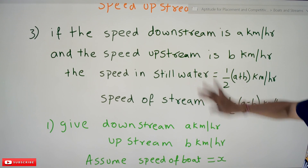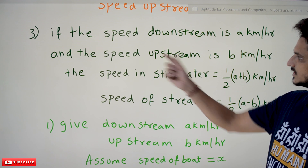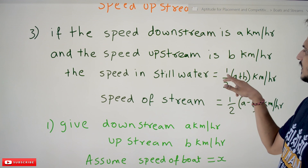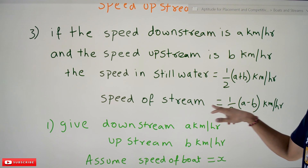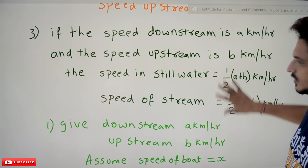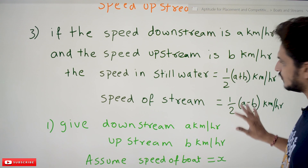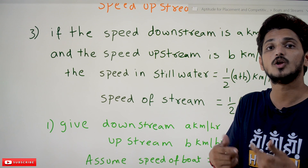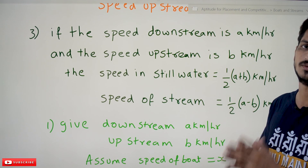If the speed downstream is a kilometers per hour and the speed upstream is b kilometers per hour, then the speed in still water is equal to half of (a plus b) kilometers per hour, and the speed of the stream is half of (a minus b) kilometers per hour. You should understand the procedure of how we got this formula — don't just remember it, because understanding the procedure will help you a lot more in solving problems.